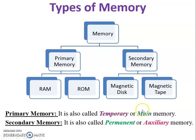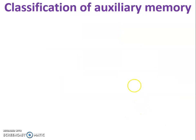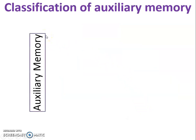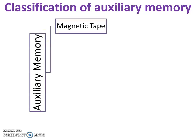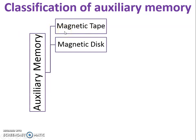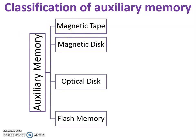Secondary memory is also called permanent or auxiliary memory, so it is also called non-volatile memory. Now, classification of auxiliary memory — auxiliary memory is divided into a total of four parts: magnetic tape, magnetic disk, optical disk, and flash memory.